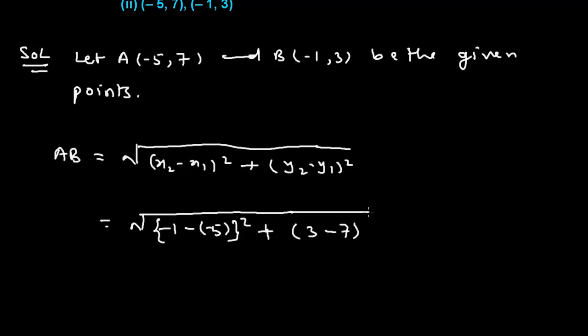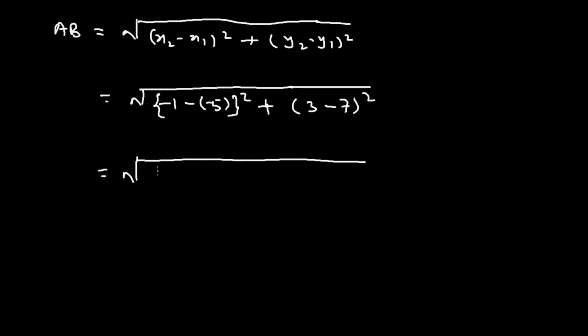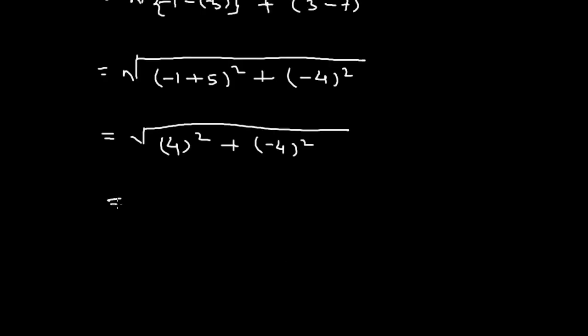If we further solve it, it equals (-1 + 5) squared plus (-4) squared. This equals 4 squared plus (-4) squared.